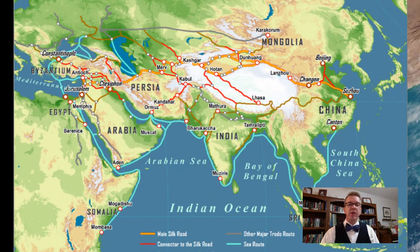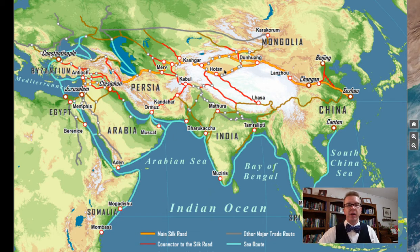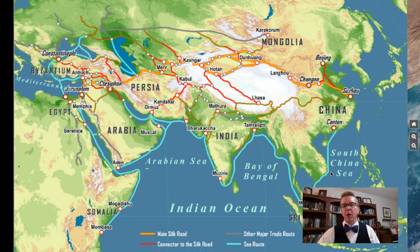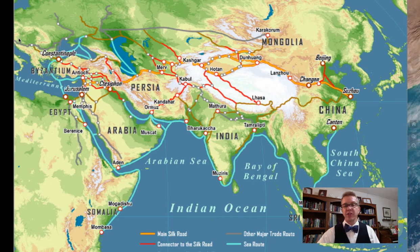Looking at that trade, here is the Silk Road, bringing silk, jade items, ceramics, and other goods to the Middle East. Long routes by land and also by sea all had to come through the Middle East to reach their final destinations, in most cases in Western Europe.